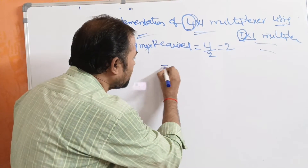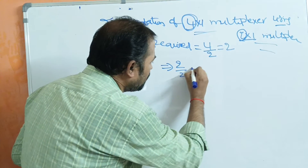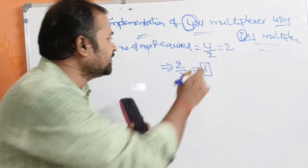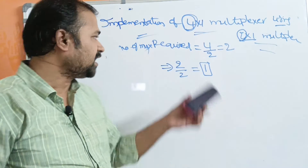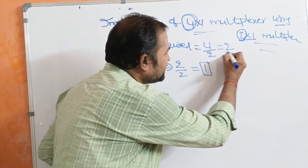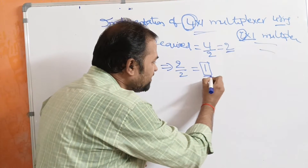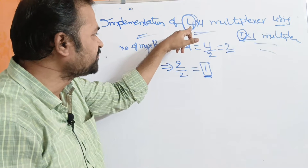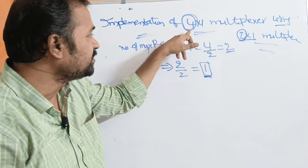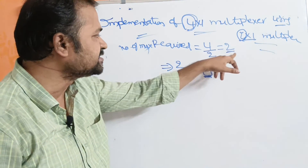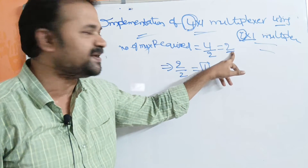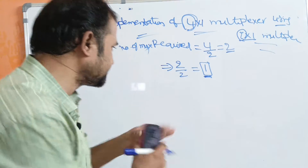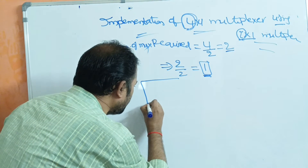We got 2 at the first level, so we divide again: 2 divided by 2 equals 1. At the second level, we require 1 multiplexer. The formula is simple: divide 4 by 2 until we get 1. So at the first level, 2 multiplexers are required; at the second level, 1 multiplexer is required. This gives us 2 two-by-1 multiplexers at level one and 1 two-by-1 multiplexer at level two.